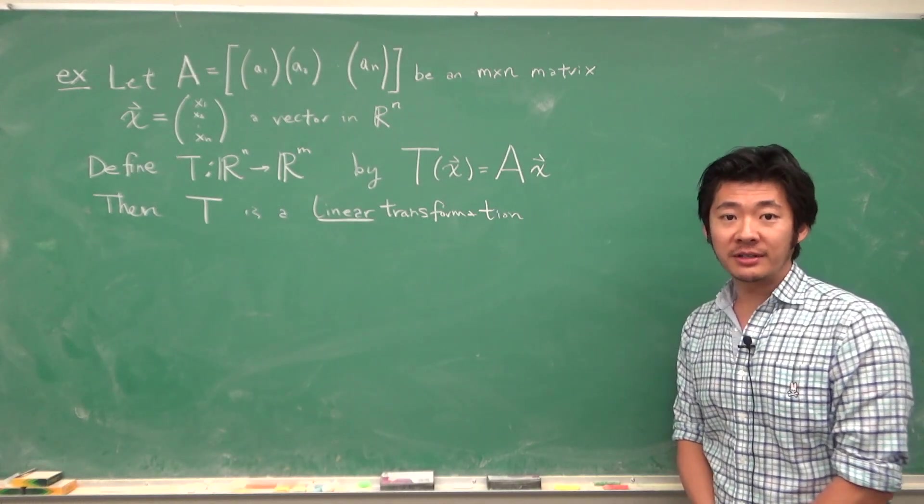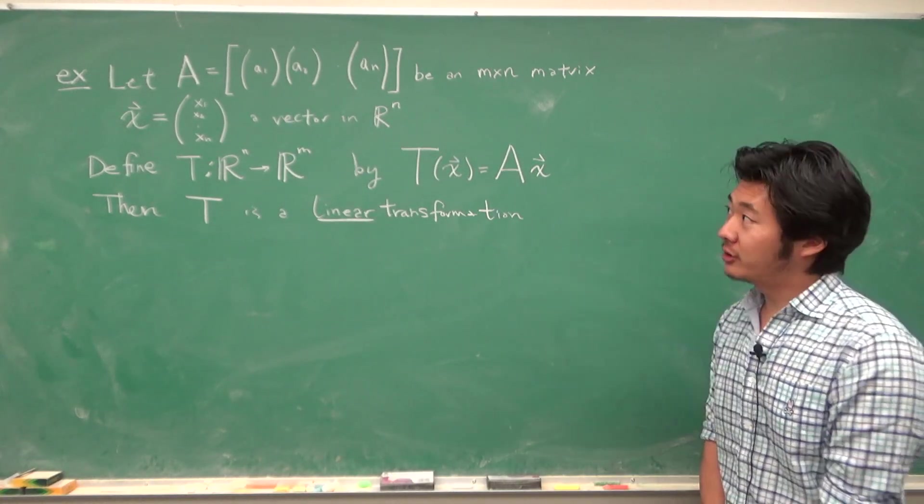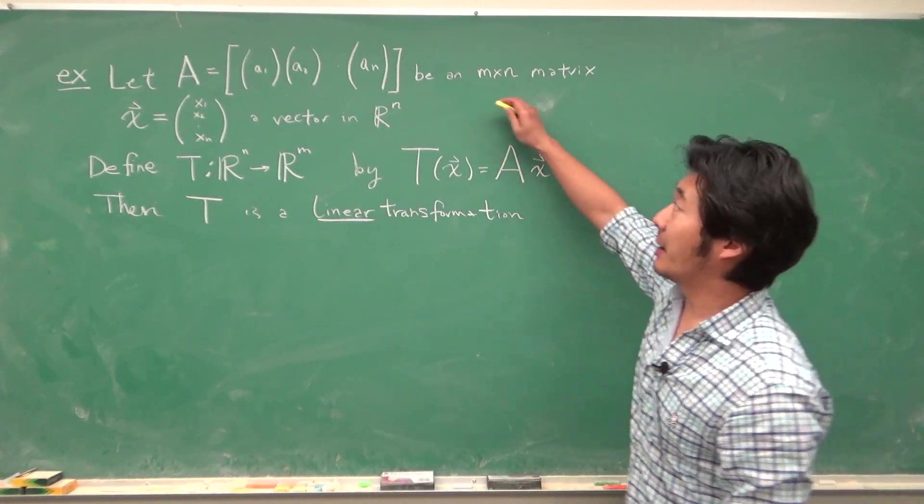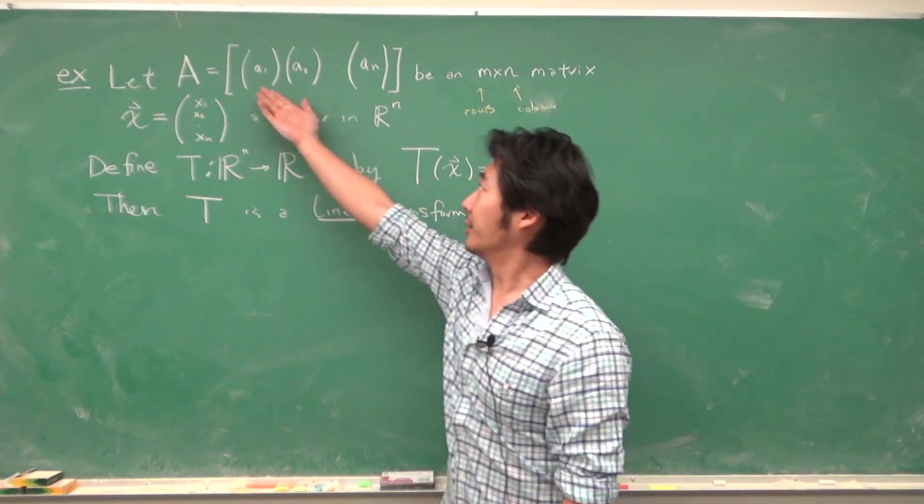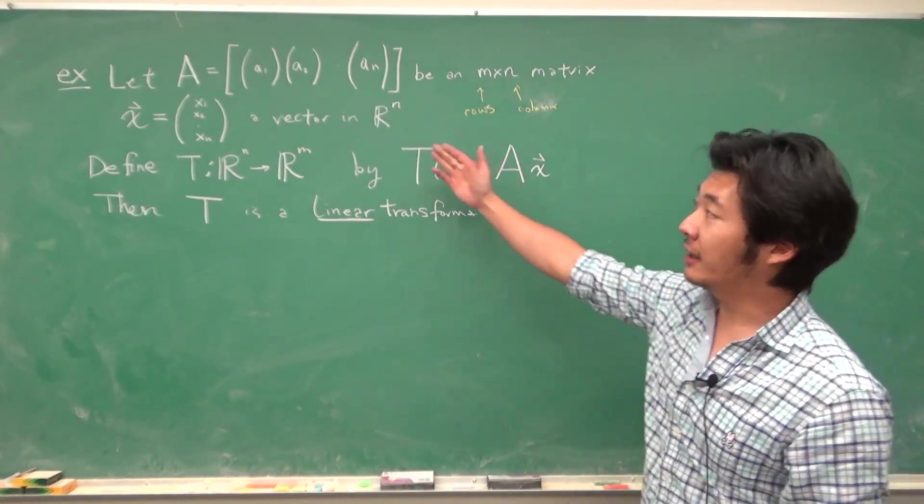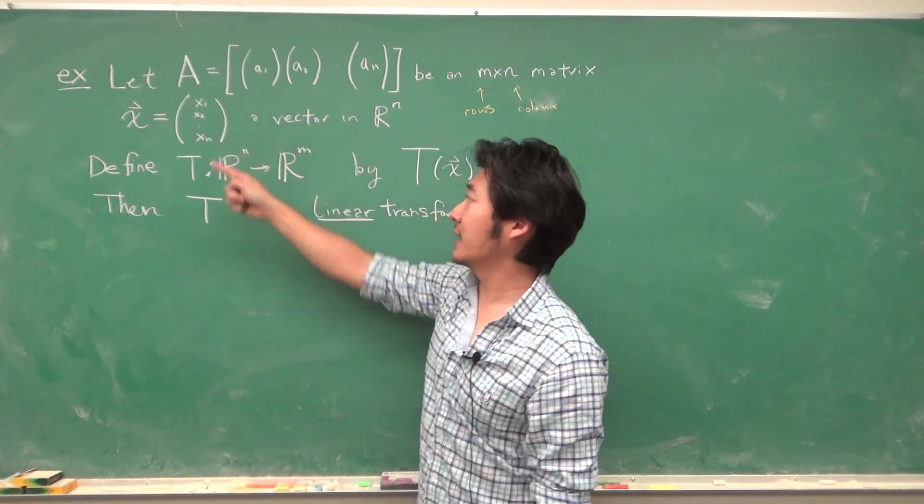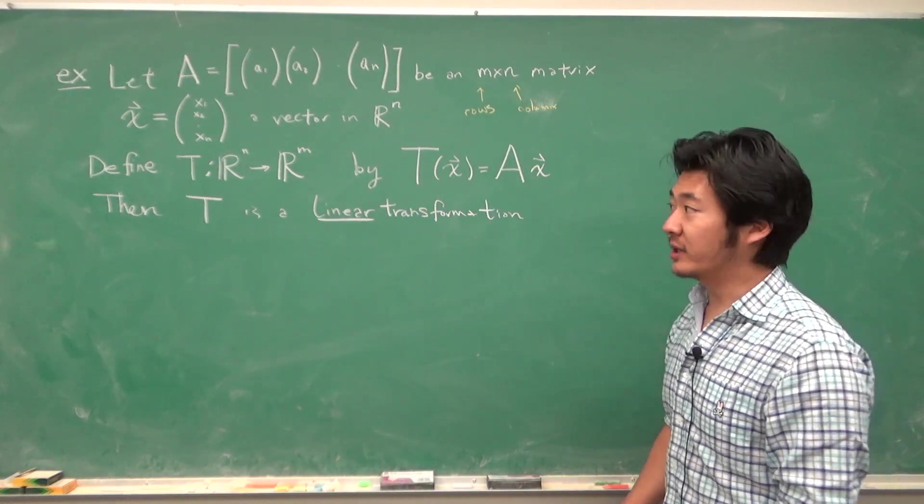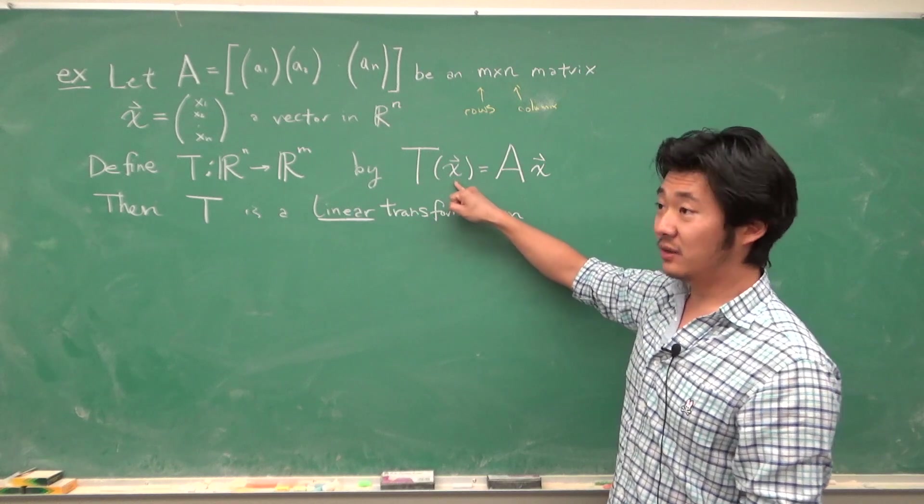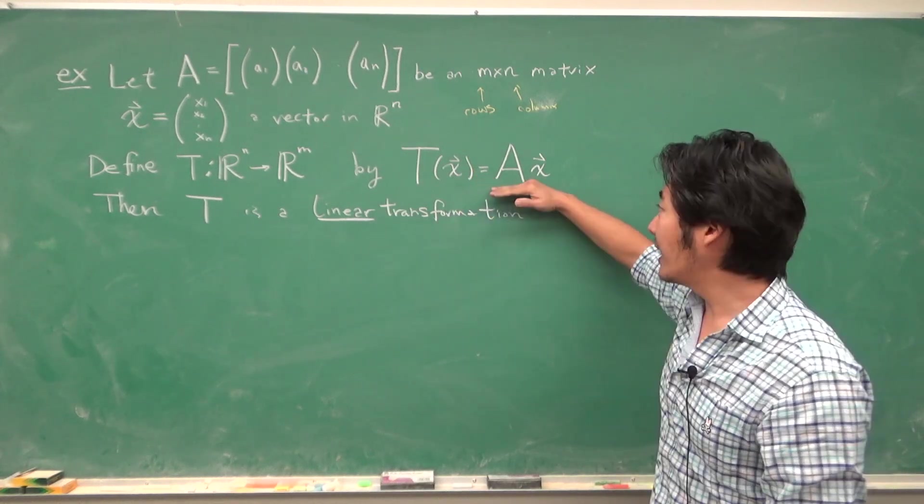Now we do a very important example on linear transformation. So let A be an m by n matrix. That means m rows and n columns, and so these will be the columns of A. Let x be a vector in Rⁿ. The entries will be x₁ to xₙ. And we define a linear transformation T from Rⁿ to Rᵐ by T(x) = Ax.